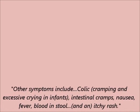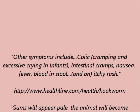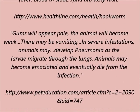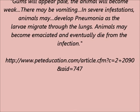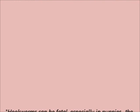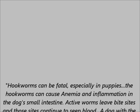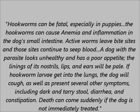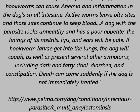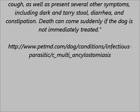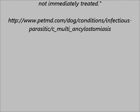There are far more other symptoms to look out for. In infants, they may experience colic — cramping and excessive crying — as well as intestinal cramps, nausea, and fever. People may also notice blood in the stool and an itchy rash. In animals, gums may appear very pale and the animal will become weak, likely due to anemia and heavy blood loss. There can also be vomiting, and animals may even develop pneumonia because larvae get into the lungs.